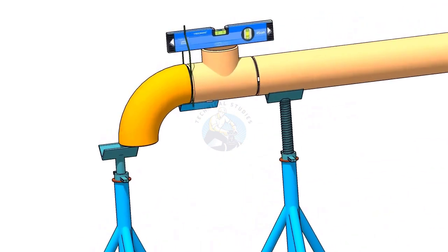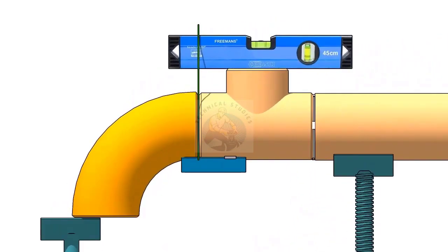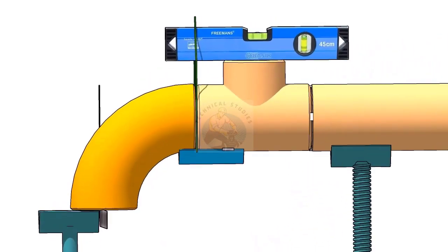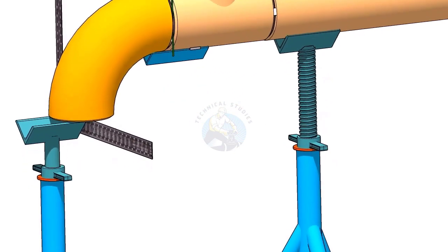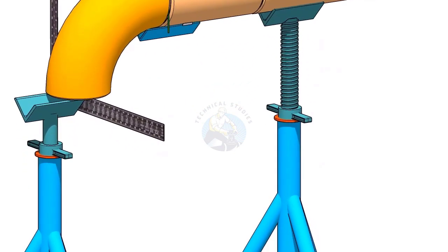Hold a large right angle or a straight edge below the elbow face firmly. Put a level bottle on the right angle as shown. Rotate the elbow to make the face level.